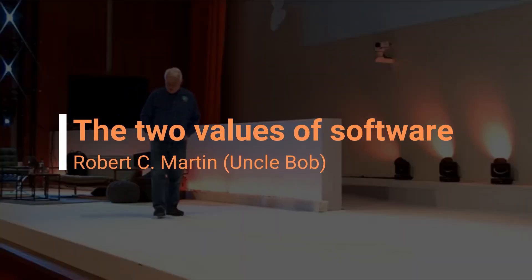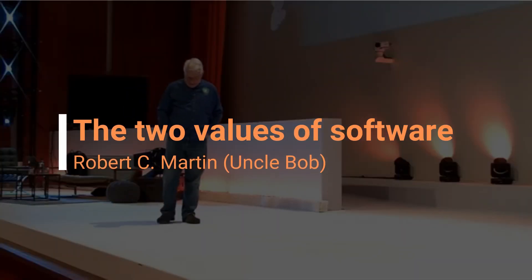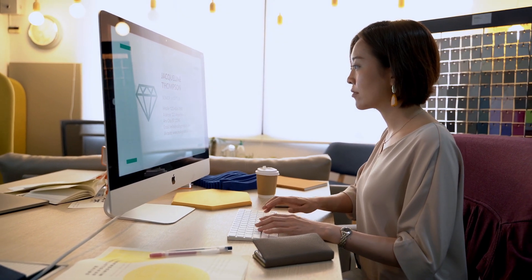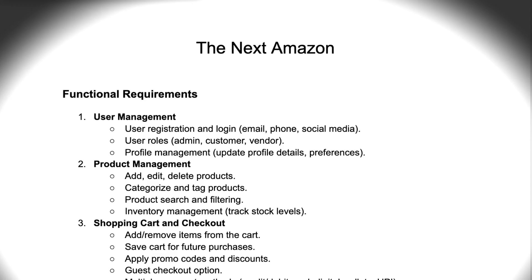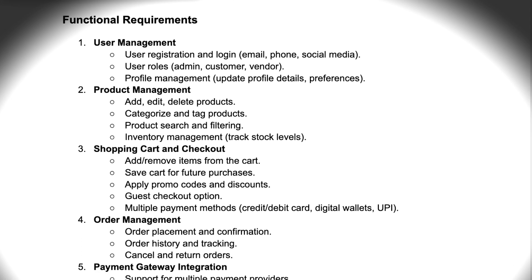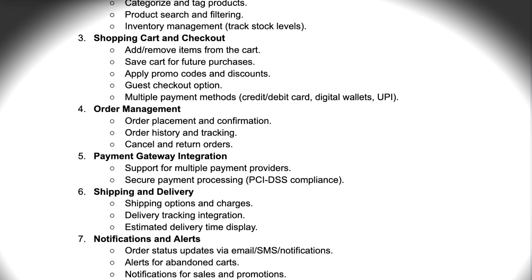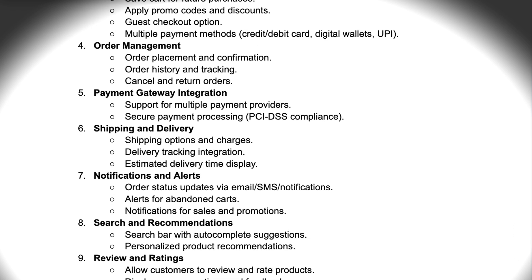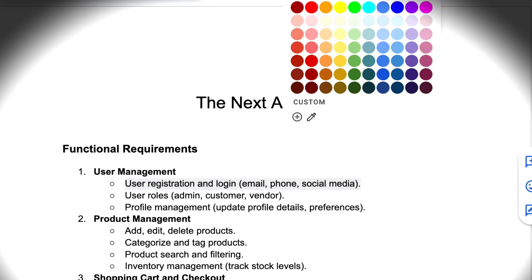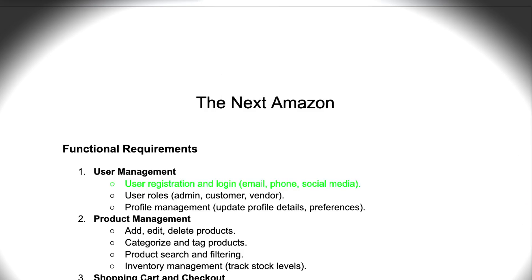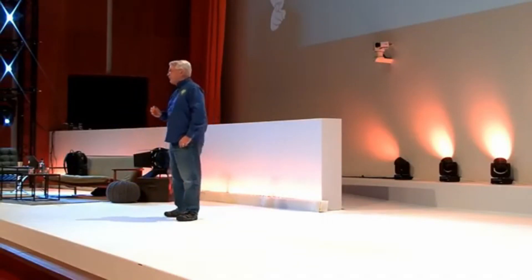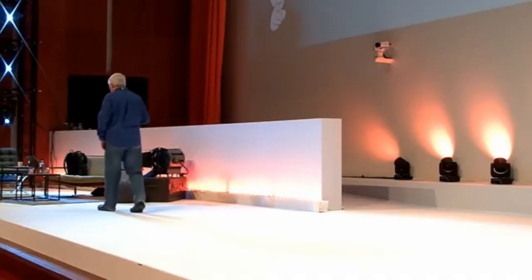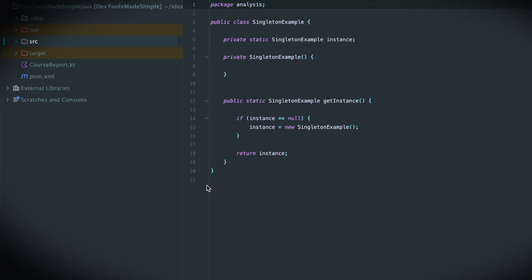Software has two values. There's the value of what it does, and there is the value of its structure. Programmers often ignore the second value. We focus on what the software has to do and we believe that our job is to satisfy that need — to meet those requirements. But if we do that, we've only satisfied the first value of software. There is a second value of software, and it is arguably the more valuable of the two. The second value of software is the structure of that software.